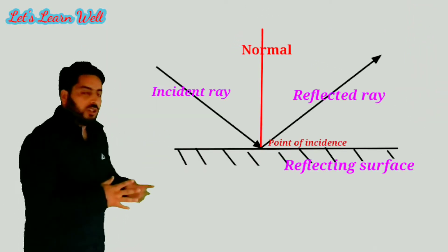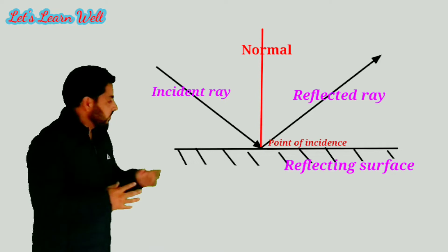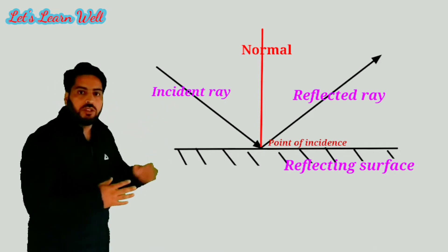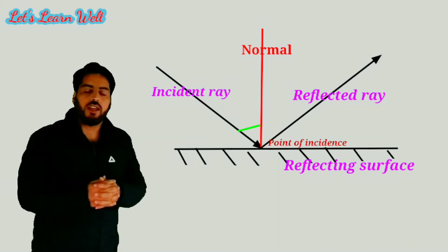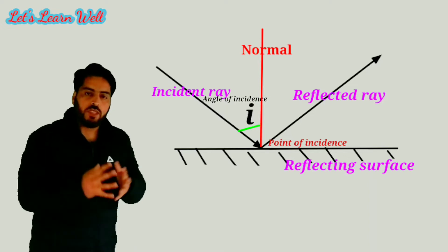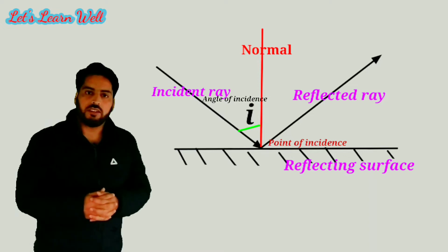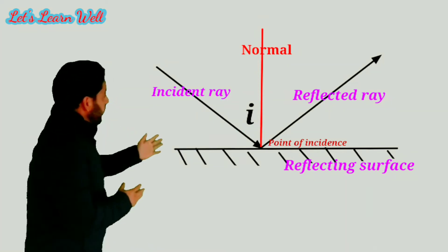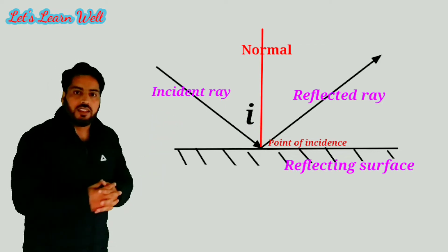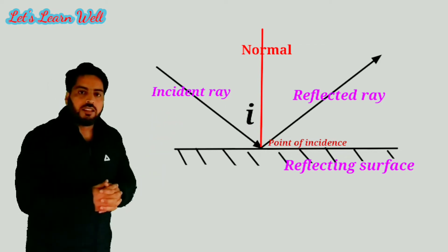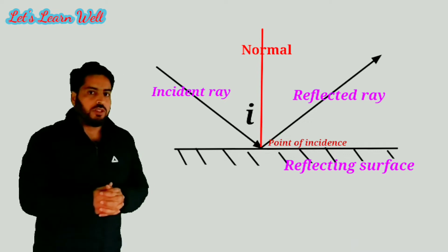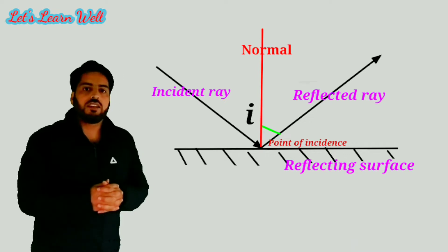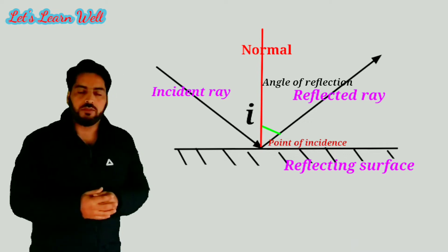In the figure, you can see that between the incident ray and the normal there is an angle. This angle is called the angle of incidence and it is represented by i. On the other side of the normal, there is another angle formed between the reflected ray and the normal. This angle is called the angle of reflection and it is represented by r.